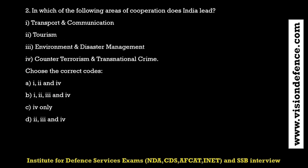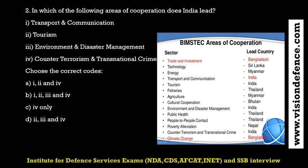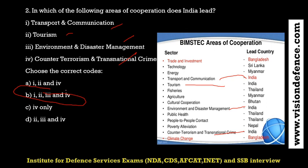Question: In which of the following areas of cooperation does India take the lead? Looking at the list, India leads in transport and communication, tourism, employment and disaster management, and counterterrorism and transnational crime. All four are led by India, so the answer is option B.